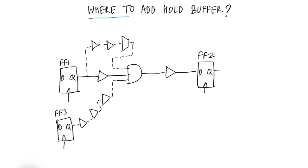In this video, let's discuss one of the interview questions about hold fixing. We have been told that there is a minus 40 picosecond hold violation on the FF2 D pin on the timing path which starts from FF1 clock pin and ends in the FF2 D pin.